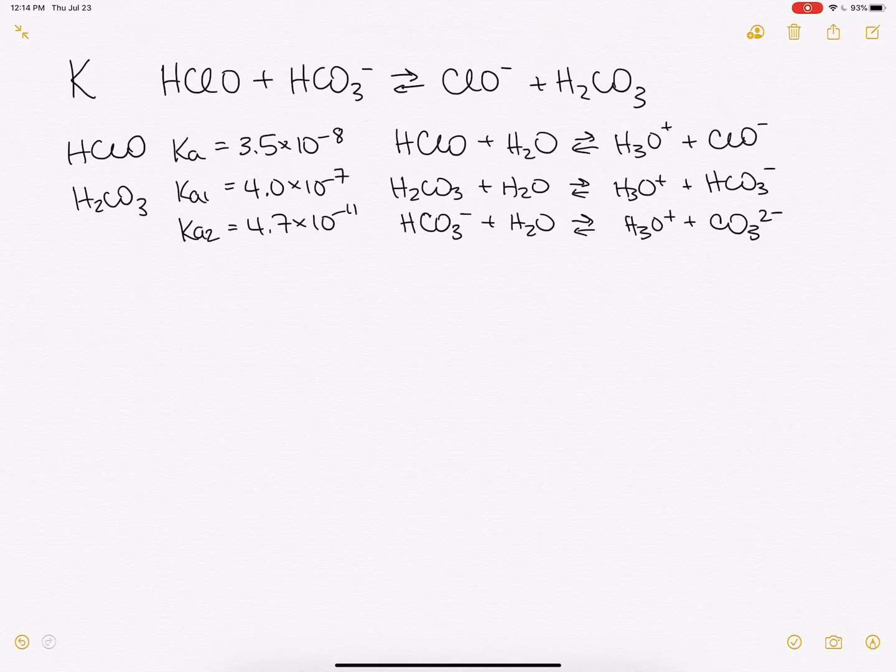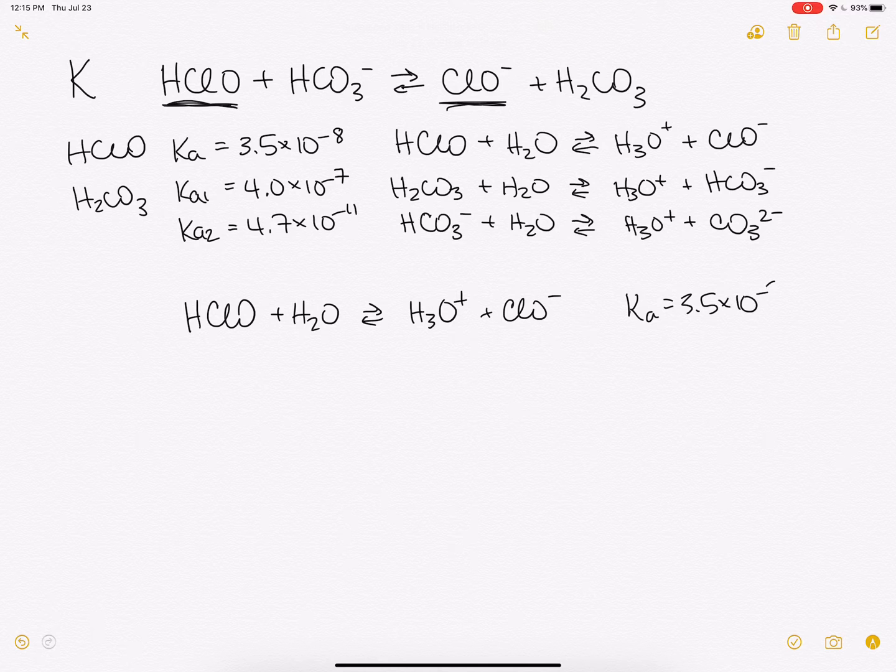with this information, which equations do we need in order to write our balanced chemical equation? And looking at them, for this sum, if we look at our overall reaction, we have here HClO and ClO-, so this first reaction, just as written, is going to be a good one to put in our mix. So we'll have HClO plus H2O makes H3O+ plus ClO-, and our K is 3.5 times 10 to the minus 8.